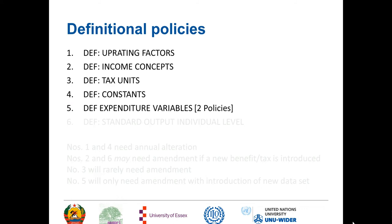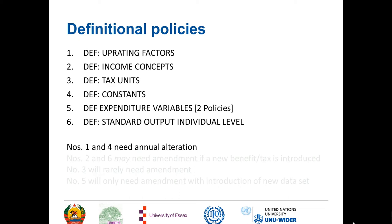There are two expenditure variable policies relating respectively to value-added tax expenditure and excise duty expenditure, and then there's a standard output at individual level definitional policy. Uprating factors and constants definitions will need probably annual uprating — certainly the uprating will, and often the constants will. Income lists and the output policy may need amendment if a new benefit or tax is introduced.